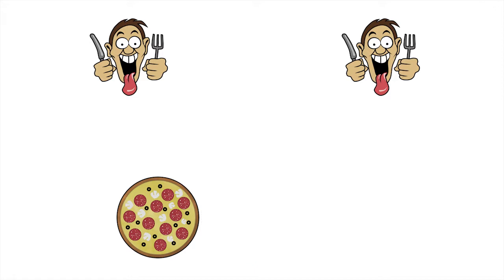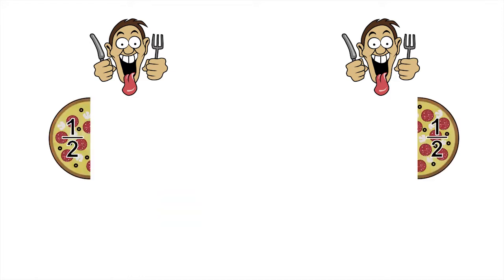There are two customers, so let's divide the first pizza up into two equal sized slices. That way the first pizza gets shared out equally. Each customer gets exactly one half of the first pizza, because the whole pizza has been divided into two equal sized slices and each customer gets exactly one slice.